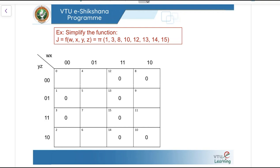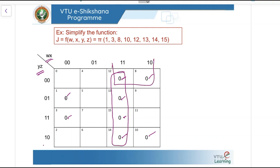Simplify the function J equals f of WXYZ equals pi of 1,3,8,10,12,13,14,15. The K-map structure remains the same with WX on one side and YZ on the other, and the decimal equivalent of each cell also remains the same. Let us verify the 0s loaded into the K-map: 1, 3, 8, 10, 12, 13, 14, and 15. Now let us group the max terms — this is one group, these two and these two are logically adjacent forming a single group, and similarly these two max terms form another group.